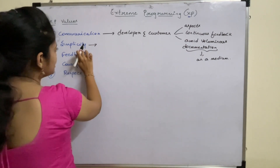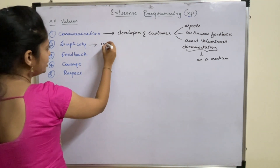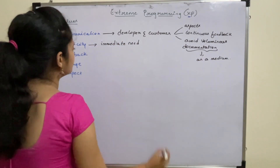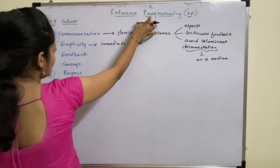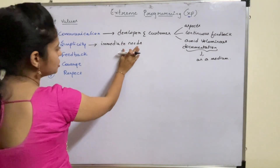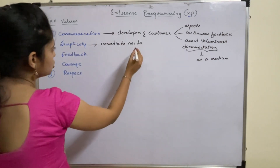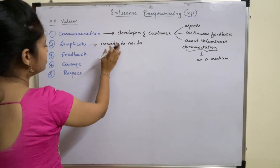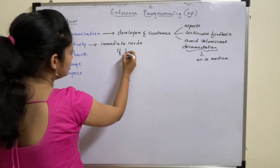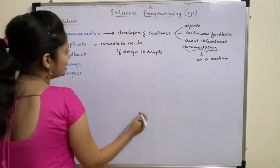Coming to simplicity. In order to achieve simplicity, XP restricts the team members to develop or design for current needs or immediate needs, instead of focusing on future needs. The main intention of simplicity is to make the process simple. If the design is simple, then it can be easily implemented in code.